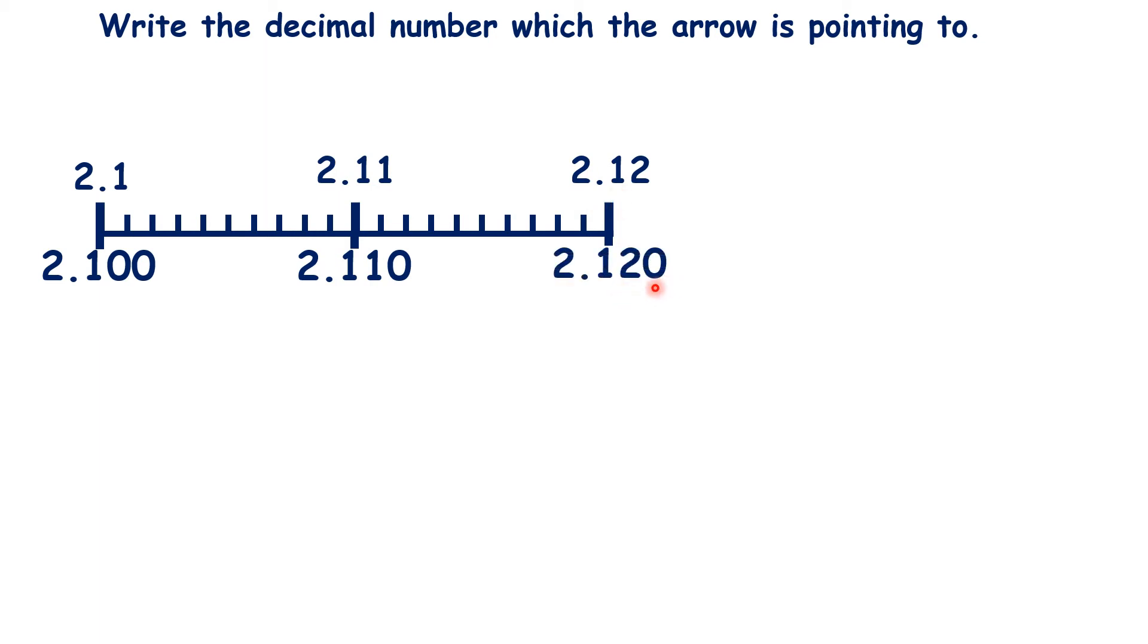So notice, when we're changing the decimal numbers, we put at least one zero on the end of each number, so we put a zero on the end of 2.12 and 2.11, and then we put two zeros on the end of 2.1.